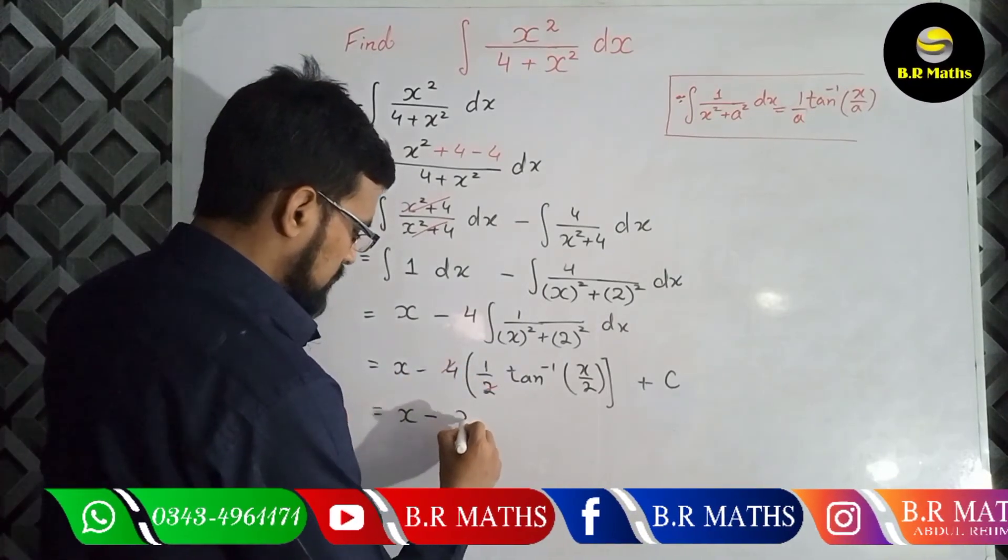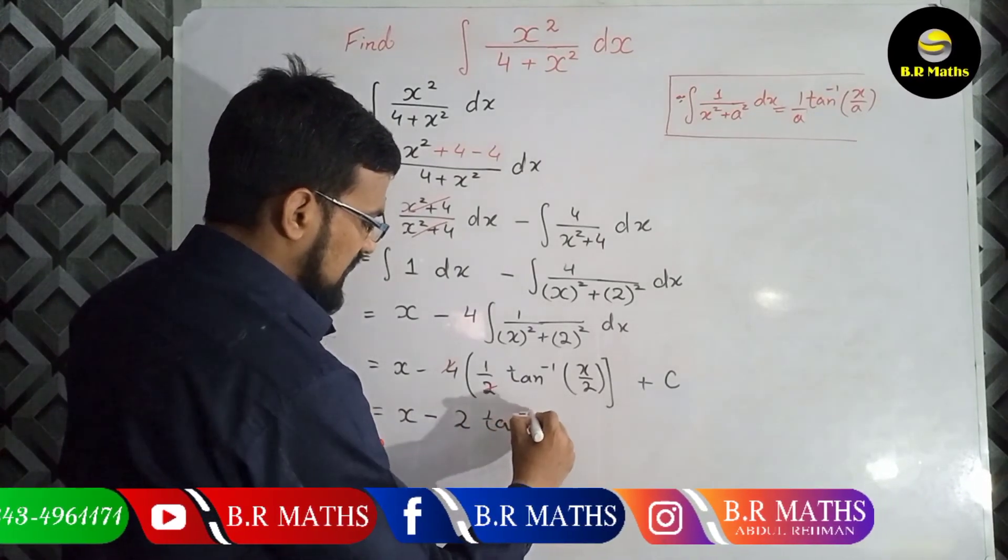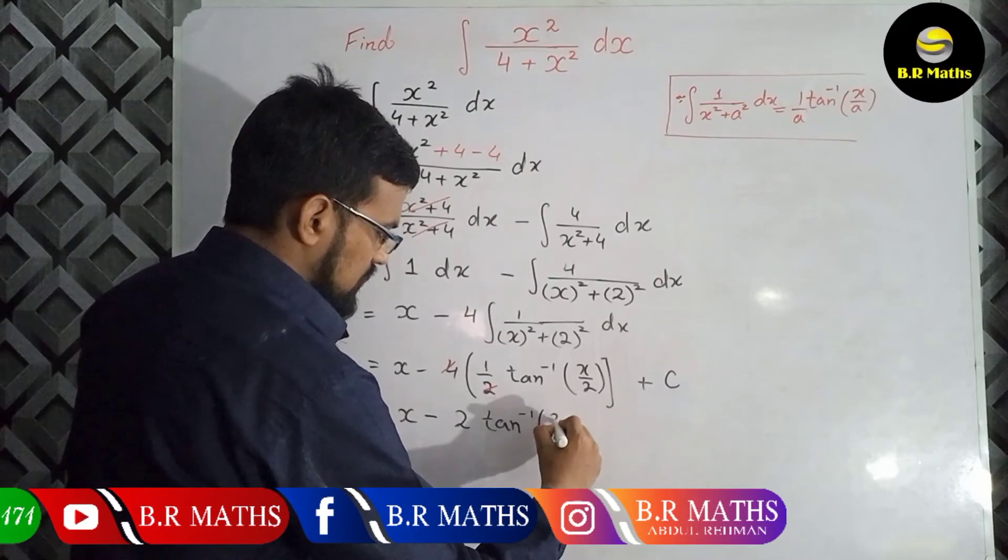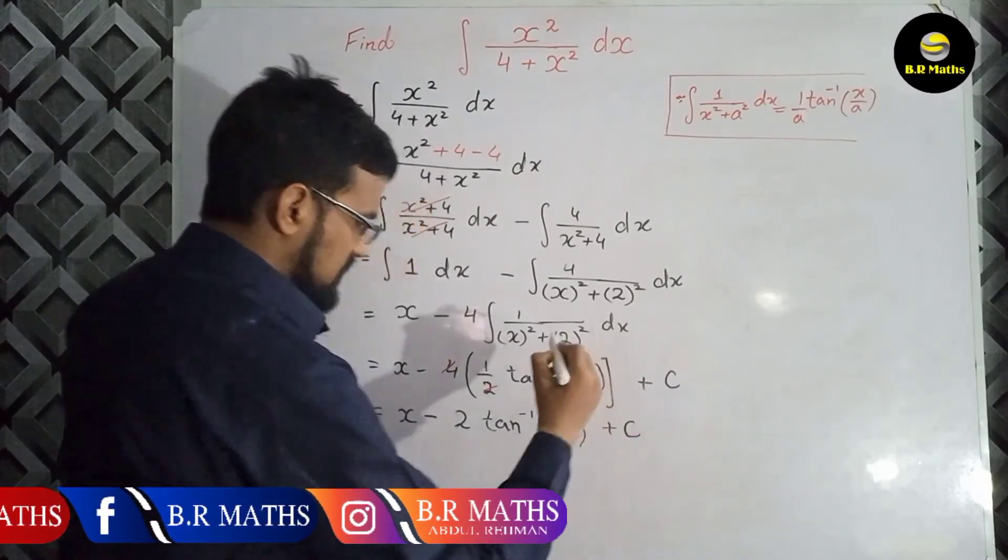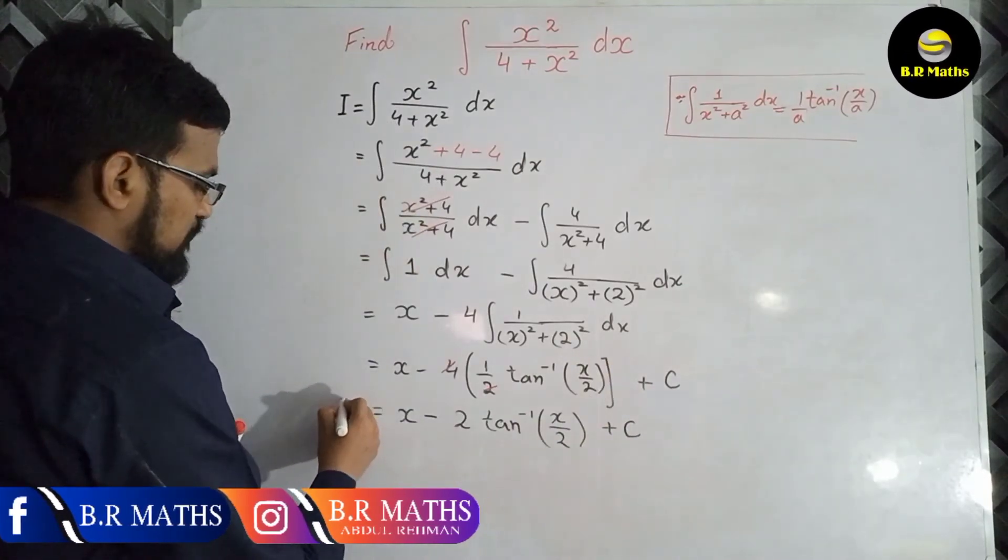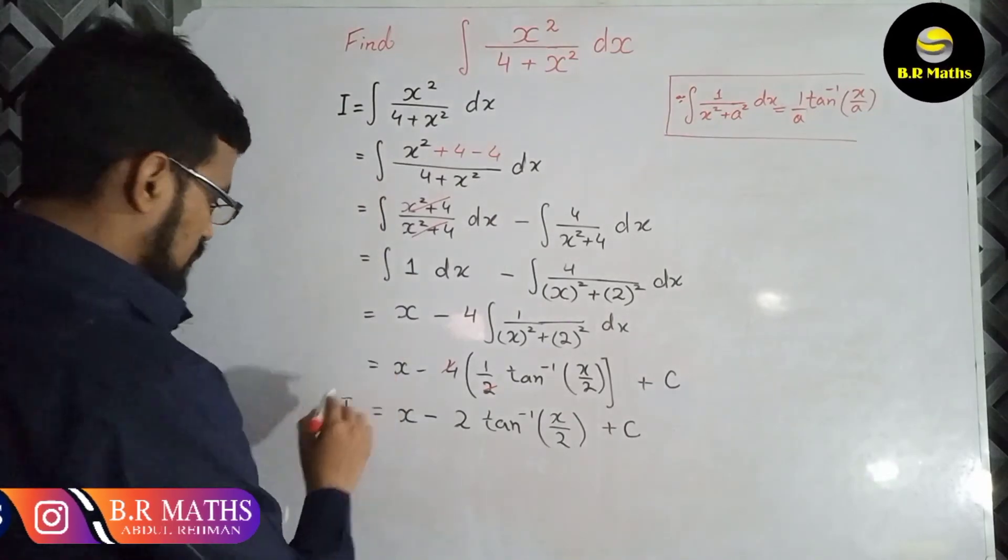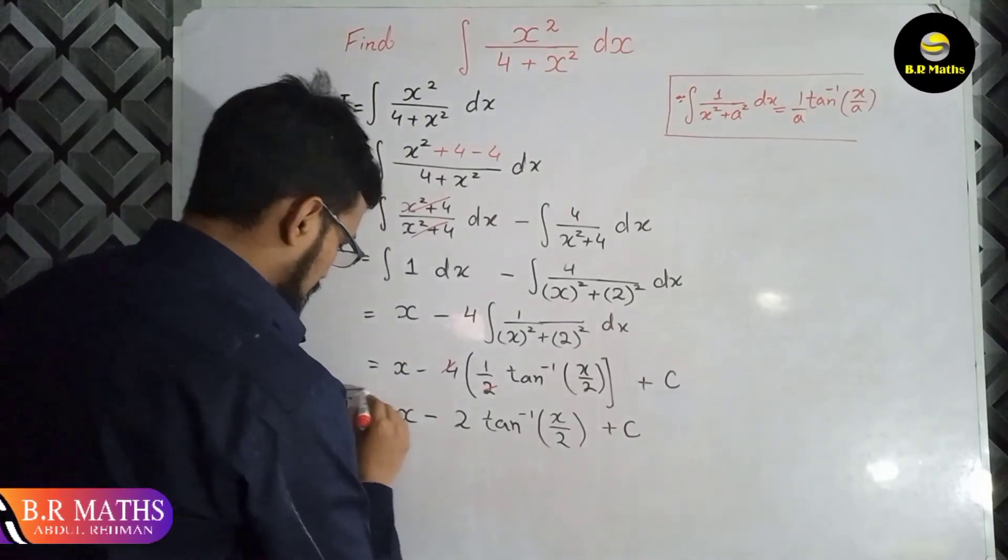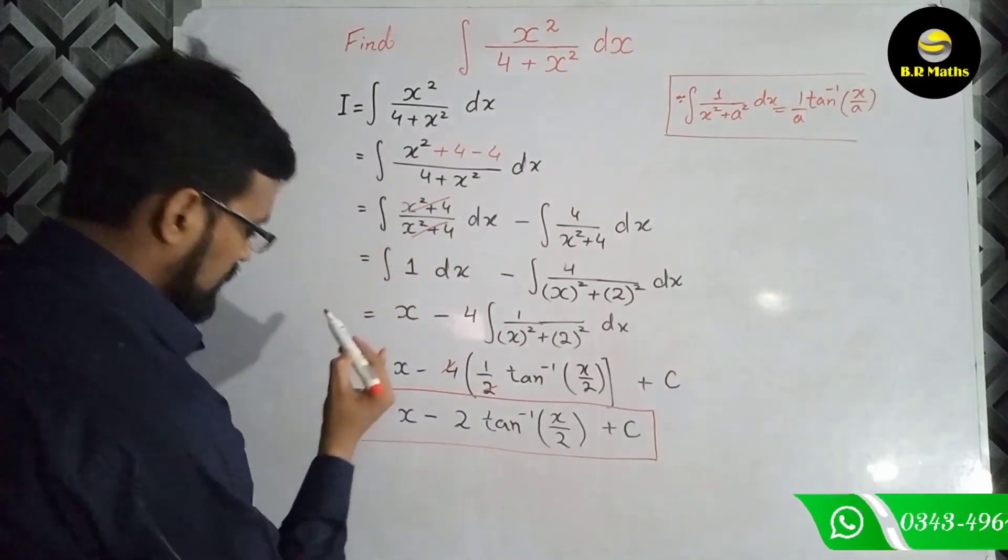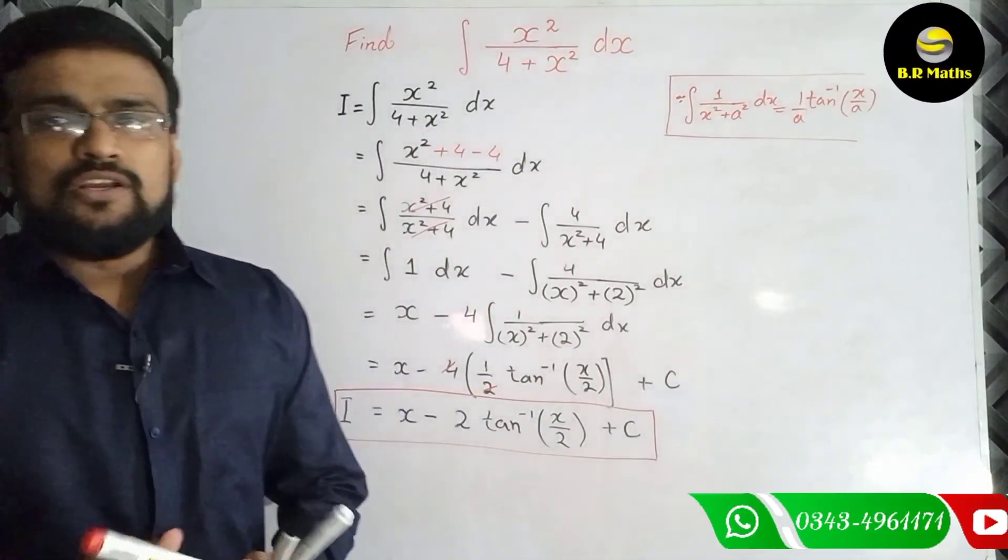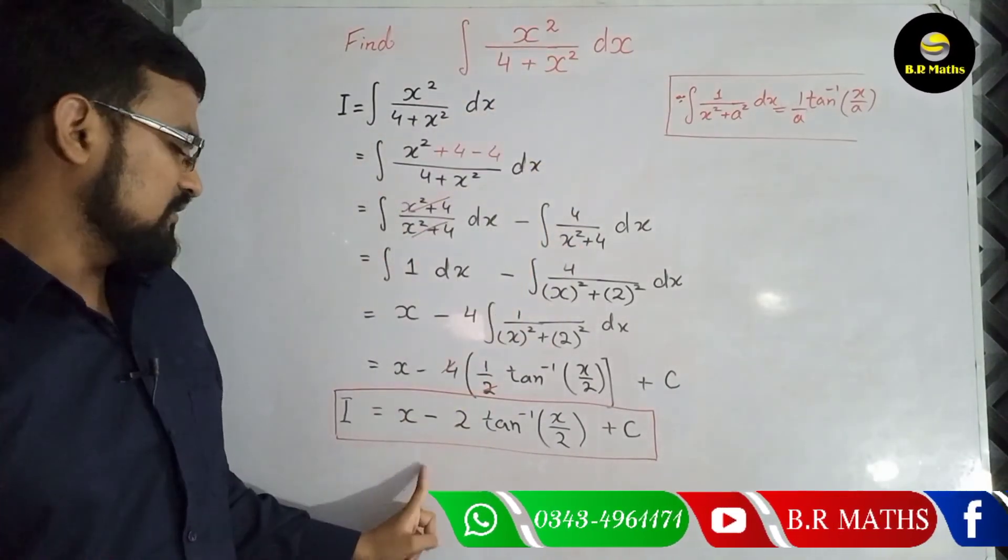This is the final result of integration of this question. So this is the most important question: x square over 4 plus x square, and then the final result of integration is x minus 2 tan inverse x over 2 plus c.